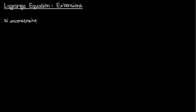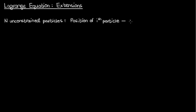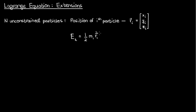Suppose we had n particles that were free to move in three dimensions — in other words, they were unconstrained. Suppose also that the position of the ith particle in this n-particle system was given by the vector ri, which consists of the three coordinates xi, yi, and zi. In that case, the kinetic energy of the entire system — all n particles combined — would be the sum of the kinetic energies of all the particles.